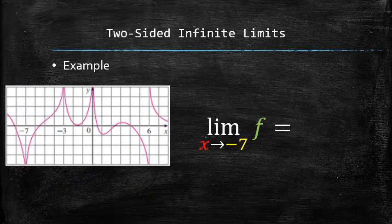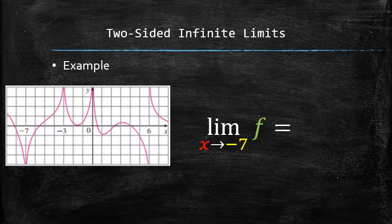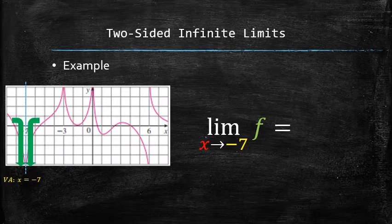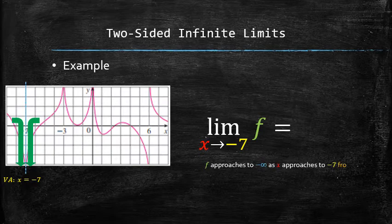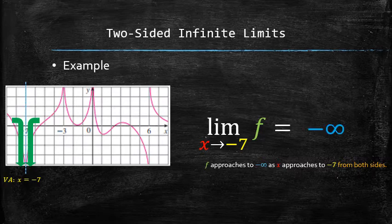To find the limit, we need to determine whether the function goes up or down on both sides of the asymptote at x equals negative 7. It is easy to see that the function approaches negative infinity on both sides. In other words, f approaches to negative infinity as x approaches to negative 7 from both sides. Therefore, the answer is negative infinity.